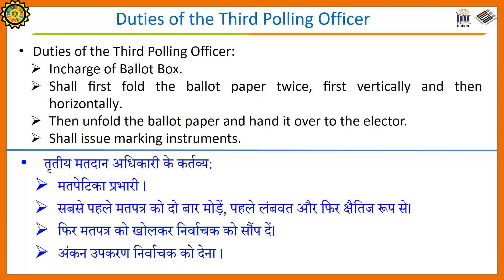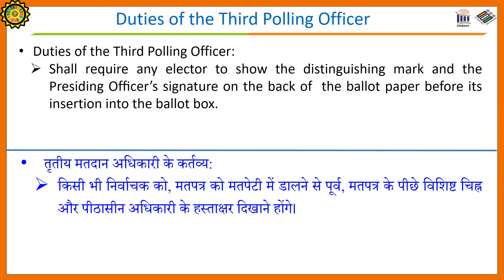Duties of the Third Polling Officer: The third polling officer is in charge of the ballot box. Shall first fold the ballot paper twice — first vertically and then horizontally. Then unfold the ballot paper and hand it over to the elector. Shall issue marking instruments. Shall require any elector to show the distinguishing mark and the presiding officer's signature on the back of the ballot paper before its insertion into the ballot box.